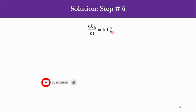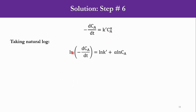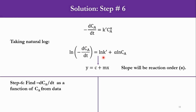Step 6: taking the natural log of −dCa/dt = k'·Ca^α gives: ln(−dCa/dt) = ln(k') + α·ln(Ca). This corresponds to y = c + mx, where m is alpha, x is ln(Ca), y is ln(−dCa/dt), and c is ln(k'). We will use the differential method to find alpha and k'.